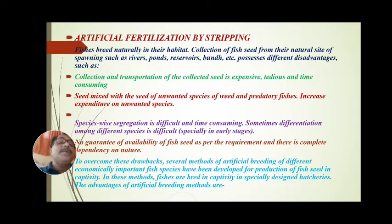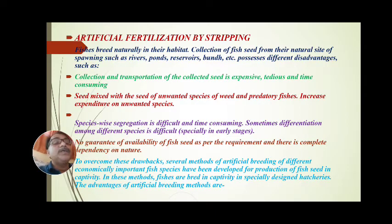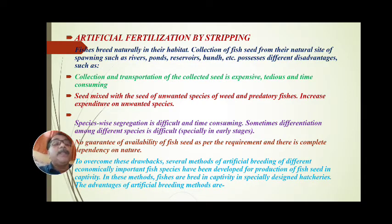Artificial fertilization by stripping method. Fishes breed naturally in their habitat. Collection of fish seed from their natural sites of spawning — such as rivers, ponds, reservoirs, and bunds — possesses different disadvantages.